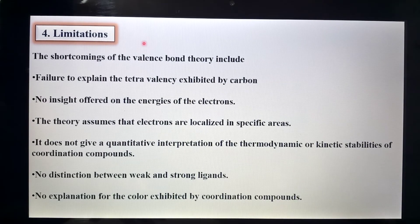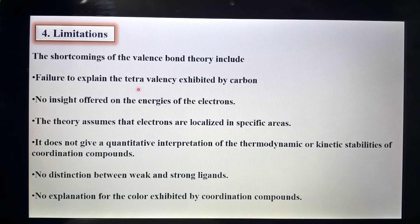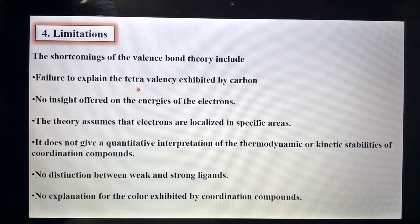Now we come to the limitations of valence bond theory. This theory has some shortcomings. The first is the failure to explain the tetravalency exhibited by carbon. Carbon has 4 valency — single, double, and triple covalent bonds exist — but a tetra-covalent bond does not exist in nature, and valence bond theory fails to explain why.